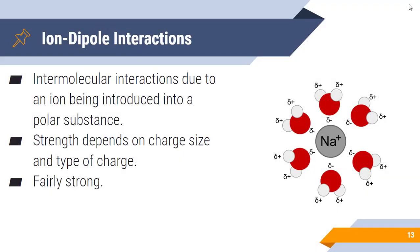Another one is ion-dipole interactions. This is an intermolecular attraction due to an ion being introduced into a polar substance. The strength depends on the charge size and type of charge present. If you take a look here, we take sodium and introduce it into water, or sodium ions from salt. The sodium is a positive charge, so the negative end of those water molecules is attracted to the positively charged sodium. This is a fairly strong interaction. Chlorine, if introduced, would have the opposite interaction. The hydrogens on water would be attracted to the chlorine because chlorine is negatively charged and the hydrogens are positively charged. The magnitude of the charge indicates the strength of the interaction. Magnesium has a plus two charge, so it's going to have a stronger interaction with water molecules than something with a plus one.